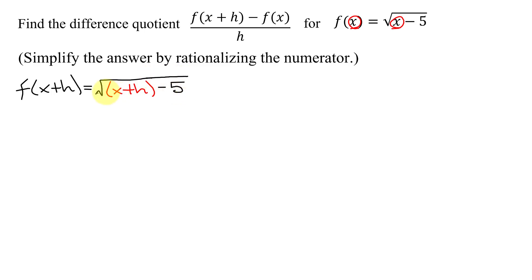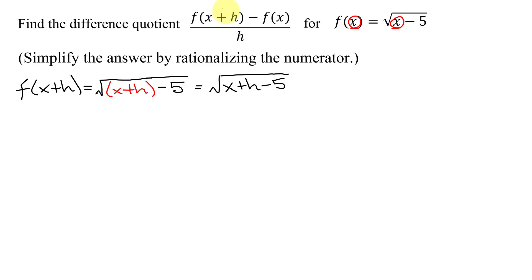I normally put x+h in parentheses — sometimes we need them, sometimes we don't. In this case, we don't. So all I have is the square root of x+h minus 5. That's f(x+h).